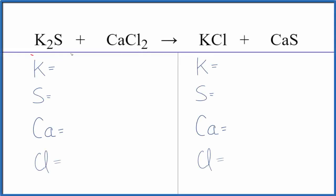Let's balance the equation for K2S plus CaCl2, potassium sulfide plus calcium chloride. First thing we'll do to balance the equation, let's count the atoms up.